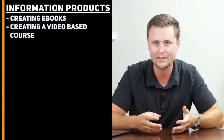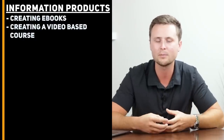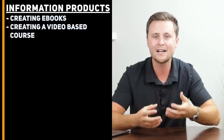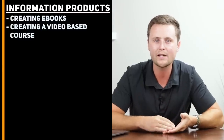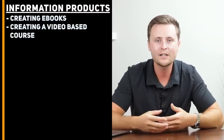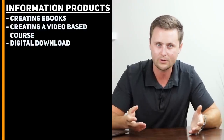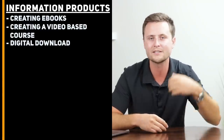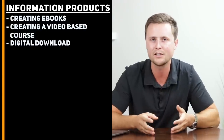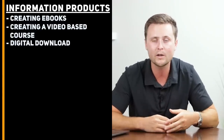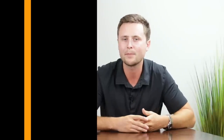The third way to monetize your affiliate marketing website is with information products. You can create your own ebook and sell it as a digital download directly on your website, or create a video-based course. Creating an ebook isn't as hard as writing a novel — you can do it on your own computer in PDF format. When someone buys it, it instantly downloads and you don't have to fulfill any orders. The same passive fulfillment applies to video courses.